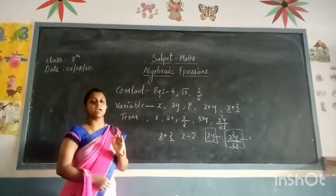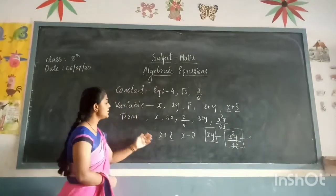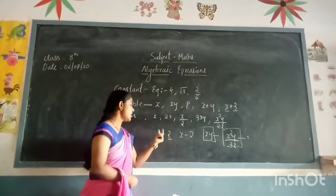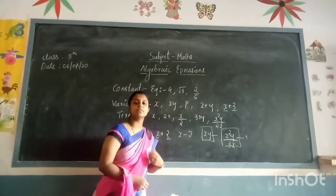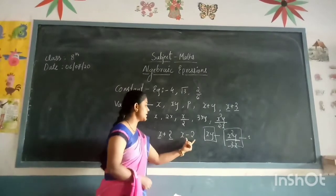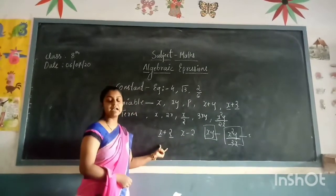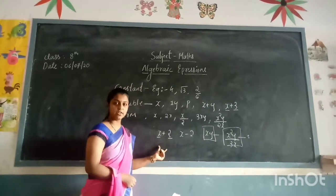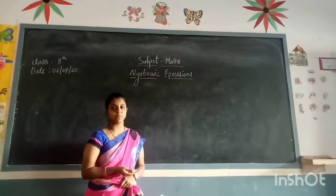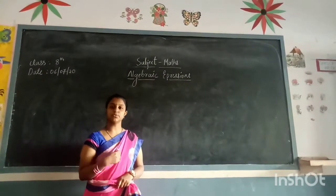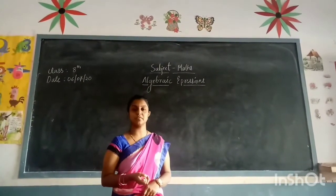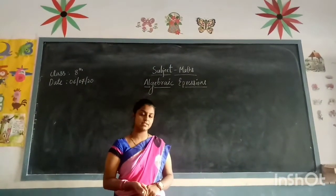Next, what does it mean by algebraic expression? The combination of terms with mathematical symbols — addition, subtraction, multiplication, division — gives us an algebraic expression. So an algebraic expression is a single term or more than two terms which are connected by addition, subtraction, multiplication, or division together.